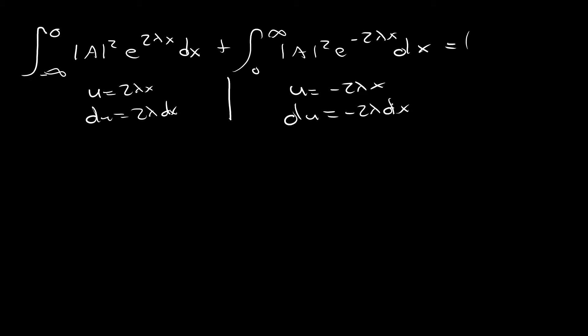And when we do this integration, we get the following. We're going to get the magnitude of A squared times the quantity of 1 over 2 lambda integral minus infinity to 0 of e to the u du plus 1 over minus 2 lambda. So this actually turns into a minus if you want it to, but we're just going to leave it that way. Integral 0 to infinity of e to the u du. And again, all of this still just equals 1.